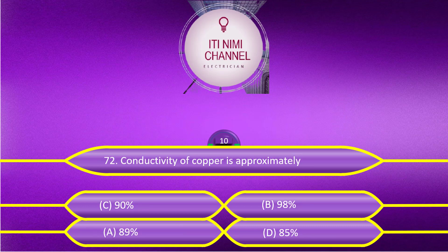The conductivity of copper is approximately: Option A, 90%; Option B, 98%; Option C, 89%; Option D, 85%. The answer is Option A, 90%.